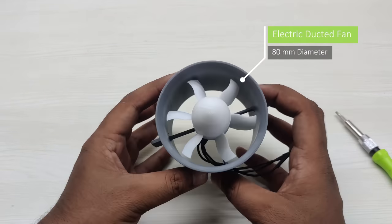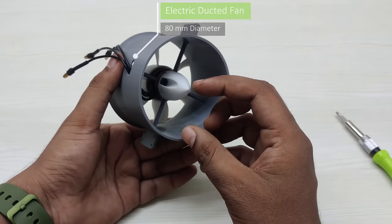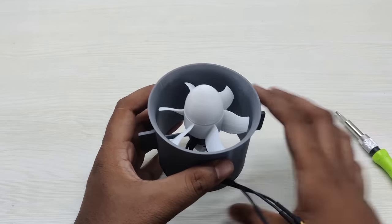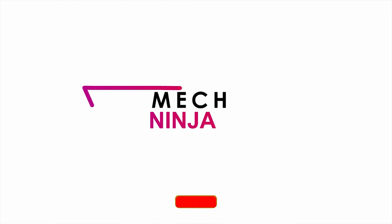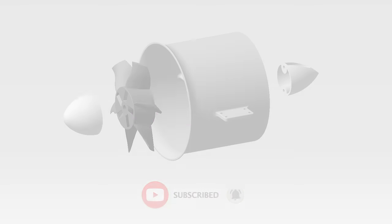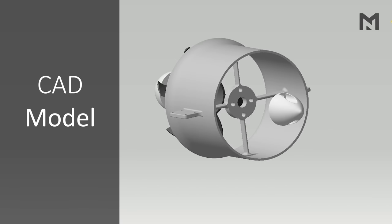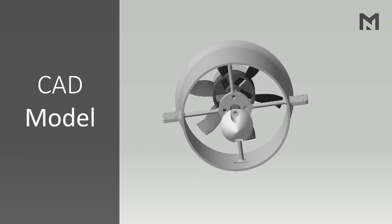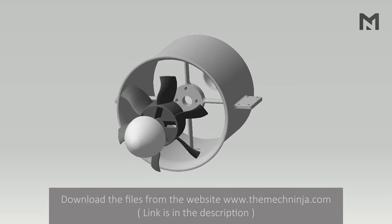This time we'll be designing an 80mm ducted fan and checking its thrust with different propellers. This is the CAD model of the ducted fan with all its necessary parts. You can download the files from the website themacninja.com.